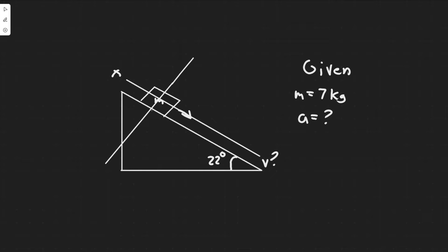In this problem, we're told the block shown in the figure has mass m equals 7 kg and lies on a thick, smooth, frictionless plane tilted at an angle of theta equals 22 degrees to the horizontal. Part A: determine the acceleration of the block as it slides down the plane. Part B: if the block starts from rest 12 meters up the plane from its base, what will be the block's speed when it reaches the bottom of the incline?